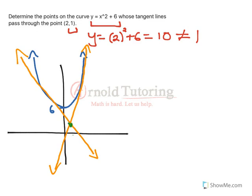Remember, my point is right there. That's (2, 1). So that's kind of the picture we're looking for, and our answers are going to be the point here on the curve where it's tangent, and the point here on the curve where it's tangent, where those tangent lines go through (2, 1).